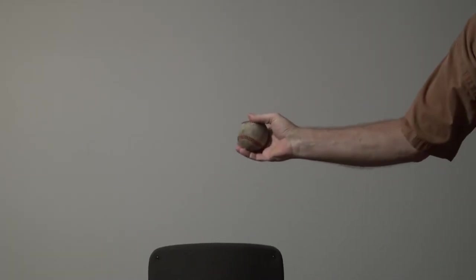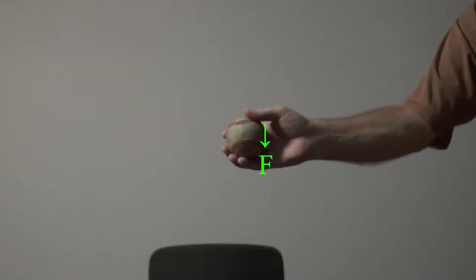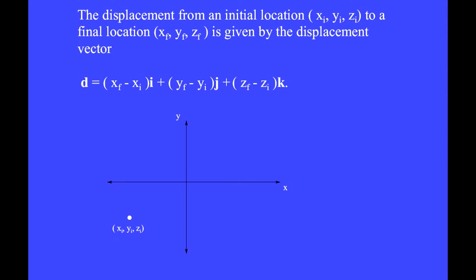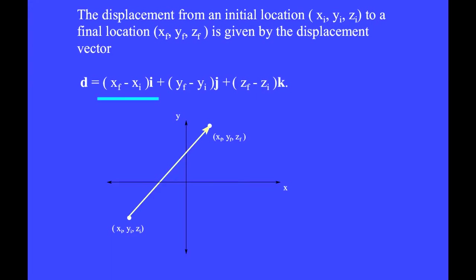You throw a baseball or a rock by applying a force through a distance. The displacement from an initial location to a final location is given by the displacement vector d equals (xf minus xi) î-hat plus (yf minus yi) ĵ-hat plus (zf minus zi) k̂-hat. The tail of the displacement vector is at the initial location, and the tip is at the final location.